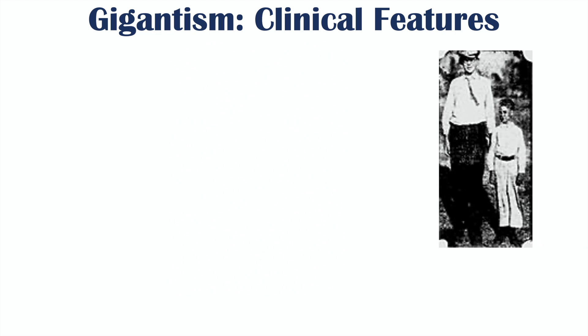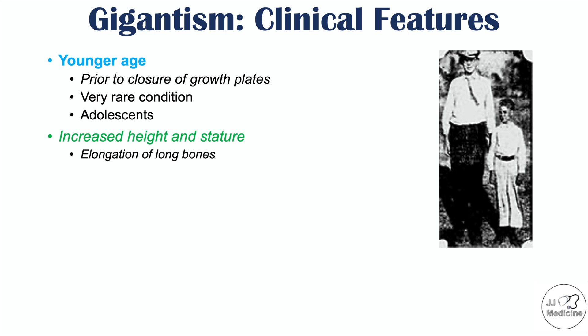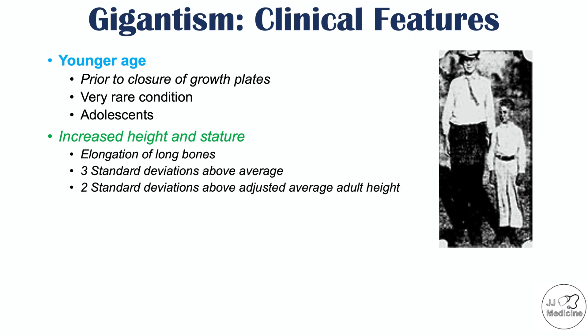This is a picture of Robert Wadlow, a famous case of gigantism, shown here at age 10 and notably taller than a boy of similar age. Gigantism occurs in younger patients before closure of growth plates, and is actually a very rare condition often presenting in adolescence. The key clinical feature is increased height and stature due to elongation of long bones — specifically, three standard deviations above average for the patient's age and two standard deviations above adjusted adult height.